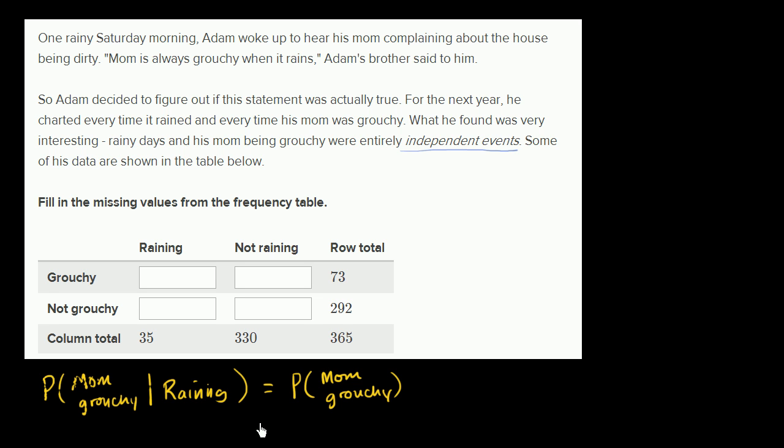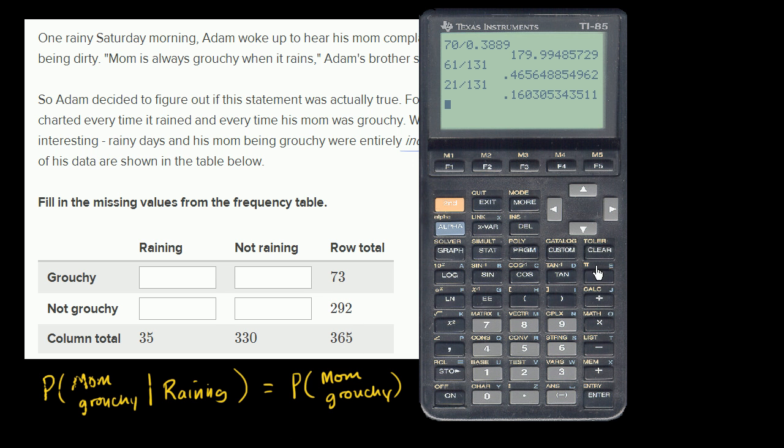So what does that tell us? Well, we can figure out the probability that mom is grouchy in general. She's grouchy 73 out of 365 days. So the probability that mom is grouchy in general is going to be 73 divided by 365. Or at least just based on the data we have, that's the best estimate that mom is grouchy. It's the percentage of days that she's been grouchy.